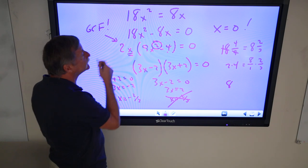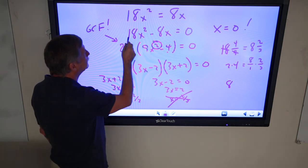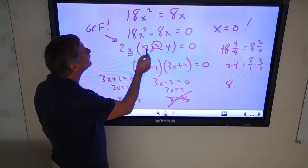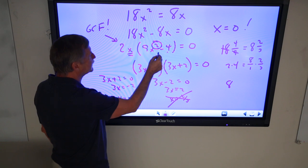Everybody see what happened here? I used my good friend the GCF, but if I factor out 2x from 18x squared, it's not 9x squared anymore, it's just 9x. And that's just minus 4.